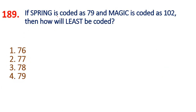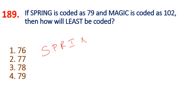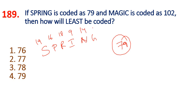189th question: if SPRING's code is 79, MAGIC's code is 102, what is LEAST's code? For SPRING: S=19, P=16, R=18, I=9, N=14, G=7. Taking the last digits: 9, 6, 15, 8, 23 — summing gives 83. For MAGIC: M=13, A=1, G=7, I=9, C=3. Total should give 102.